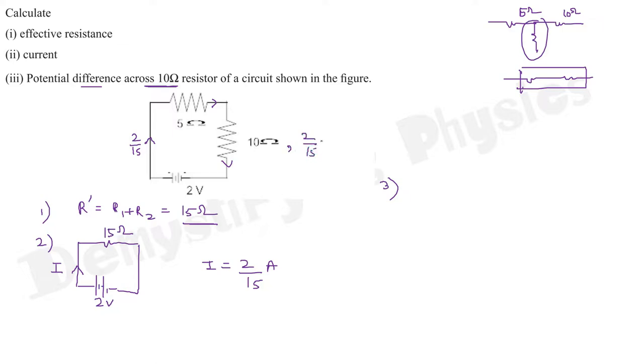So use Ohm's law here. Voltage across 10 ohm resistor will be 2/15 into 10. Voltage is I times R. Current through 10 ohm is 2/15 and resistance of the resistor is 10, so you get 4/3 volt.